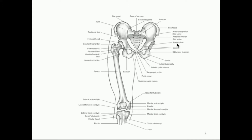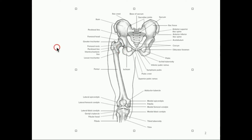One of the reasons we're able to have that motion is because the head of the femur is just this ball. This hole is the socket, so the ball on the femoral head fits into the acetabulum — the socket. The ball just rotates around the socket, and you can get free rotation of the femur in all three planes of motion.